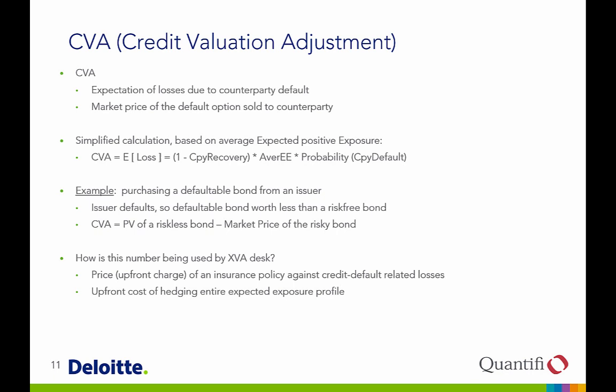People started applying CVA even before it was called CVA — for example, when purchasing a defaultable bond, the difference between the PV of a riskless bond and the market price of the risky bond is a kind of original CVA. CVA is the first part of XVA, and we now see XVA desks that trade and hedge CVA, DVA, and FVA. XVA is the price or upfront charge of an insurance policy against credit default-related losses, and the upfront cost of hedging the entire expected exposure profile.